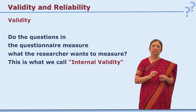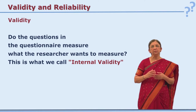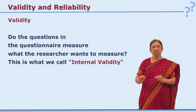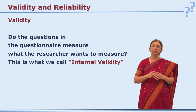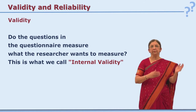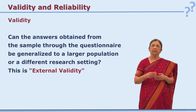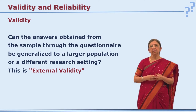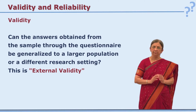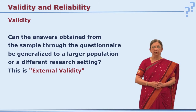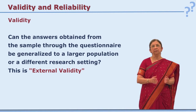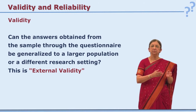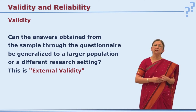Validity is of two types: internal and external. Internal validity refers to whether the tool measures what the researcher wants to measure — does this tool measure what I want to measure? If yes, it is internally valid, meaning the content reflects your objectives and hypotheses. External validity refers to the generalizability of your data — though collected from a sample, it should be applicable to the population. Enhancing generalizability means establishing external validity of your questionnaire.